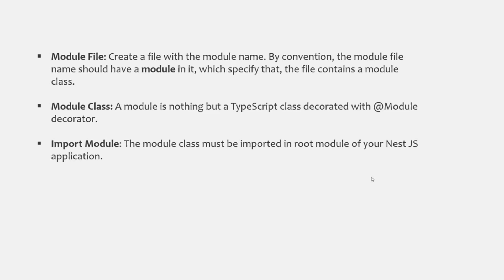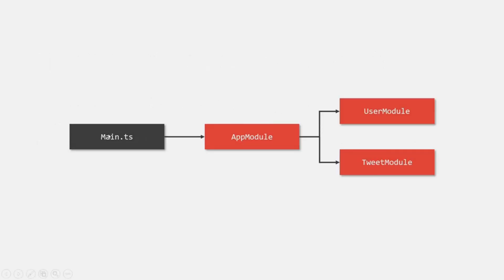For example, if we have created a user module, we must import that user module in our main module, which is usually the app module. So we must import the user module in the app module so that the NestJS application will be aware about it. When our NestJS application runs, main.ts is the entry point which bootstraps the root module of our application — in most cases, the app module. In the app module, we import all other modules which we create, such as the user module and the tweet module, connecting them to the app module so the NestJS application knows about them.